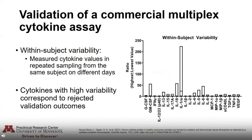With that criteria in mind, we wanted to look at within-subject variability using this assay. We did this by measuring cytokine values in repeated sampling from the same subject on different days. There are a number of cytokines that show really high variability, but if you look back at our acceptance criteria, you'll find that the cytokines with high variability correspond to our rejected validation outcomes. Since we've done this work, we won't accidentally ascribe cytokine variability to an experimental effect when it's actually due to poor assay performance.